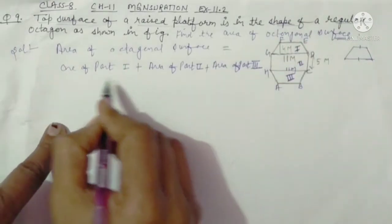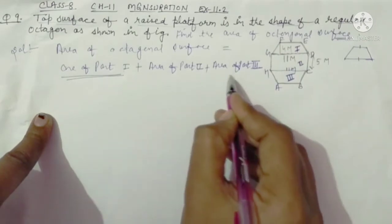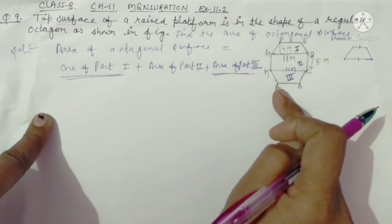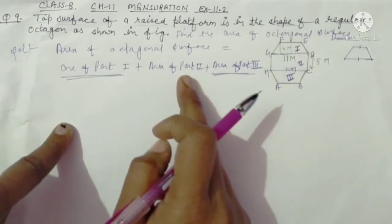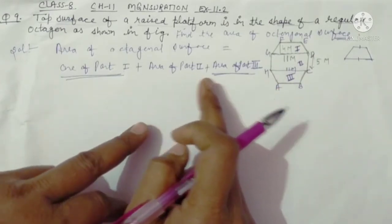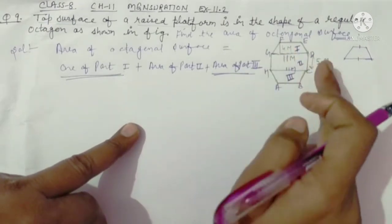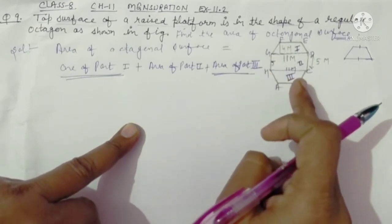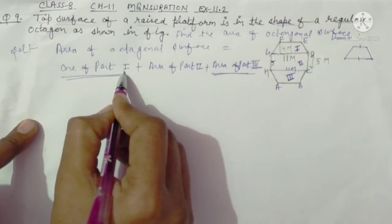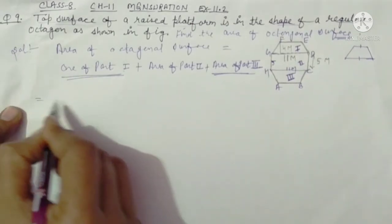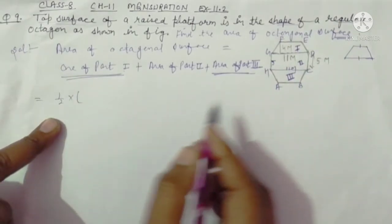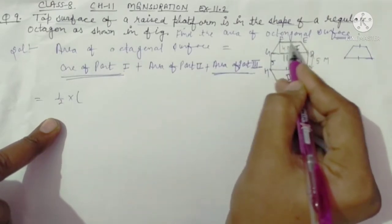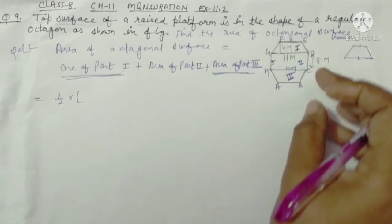First part area and third area are trapezium. Area of part second is rectangle. Area is length into breadth. First part area trapezium: one by two into sum of parallel sides 11 and this side is 5.